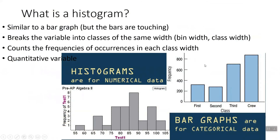So histograms and bar graphs. On the right here is a bar graph, and on the left here is a histogram. They look kind of similar — they both have bars. In the histogram there's no space between the bars, but in the bar graph there's space between the bars. On the bar graph we're broken up into categories, while in the histogram these are all numerical values. So we're using quantitative data in the histogram and categorical data in the bar graph. That's really the main difference between the two — the type of data.